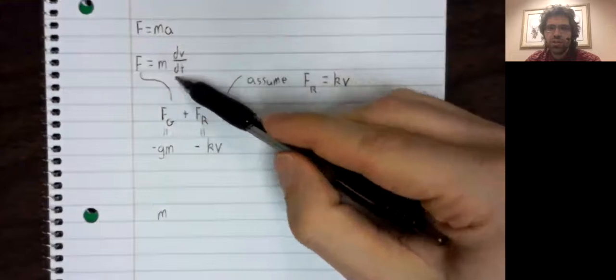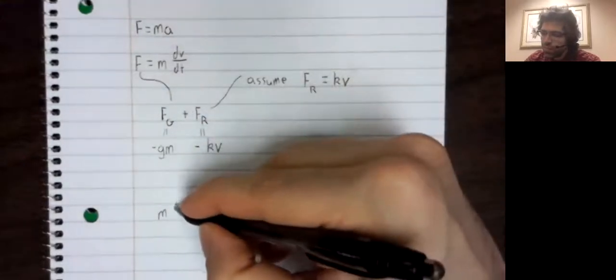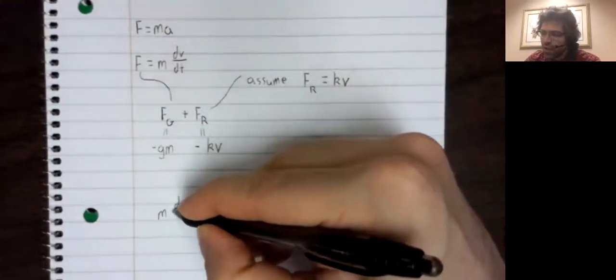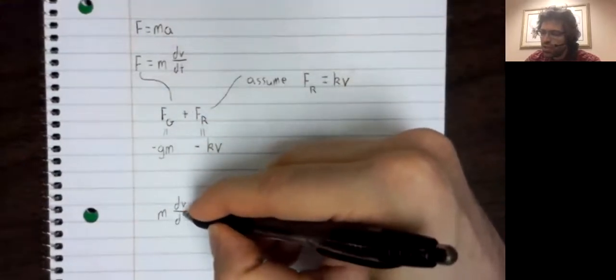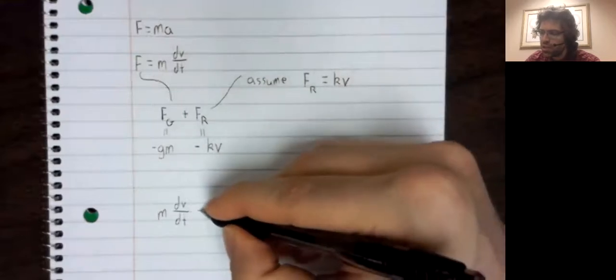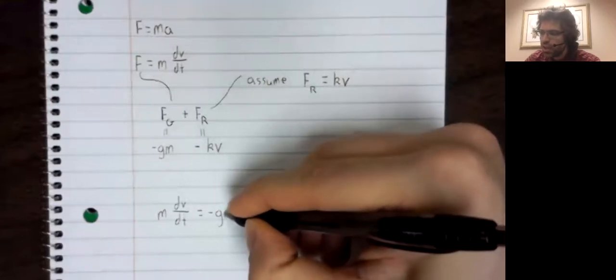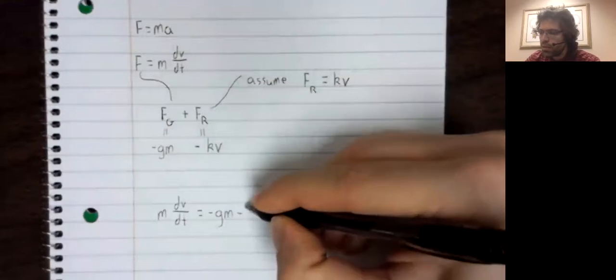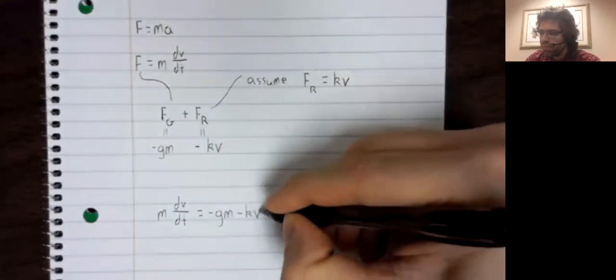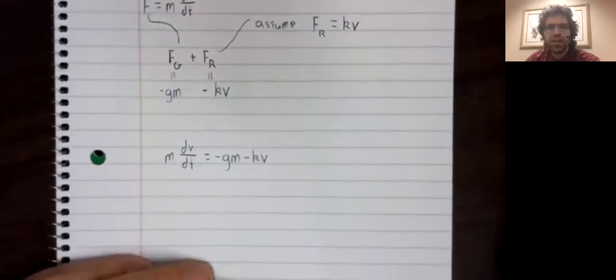And this equality becomes M times dV/dt equals negative gM minus KV.